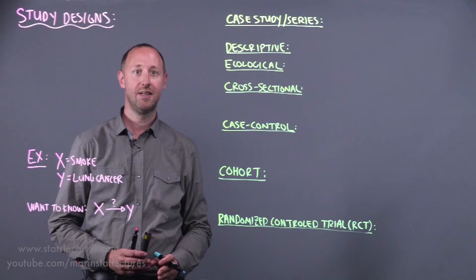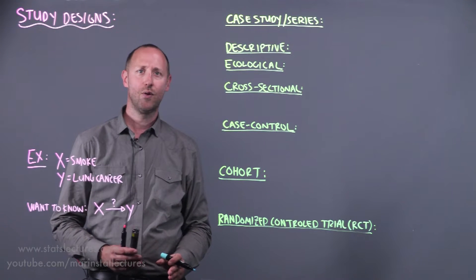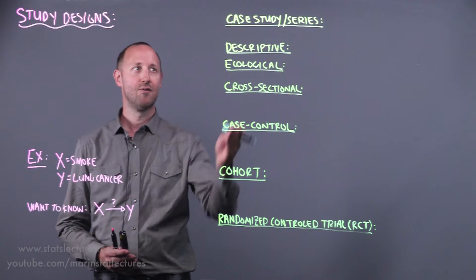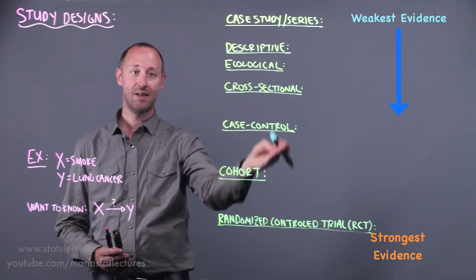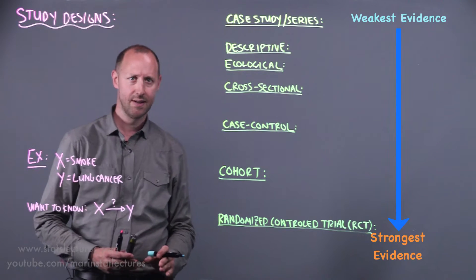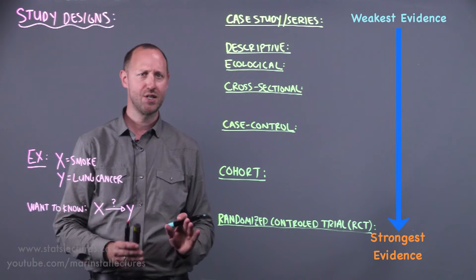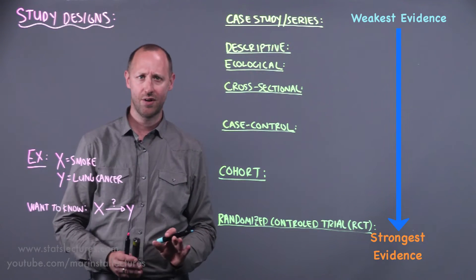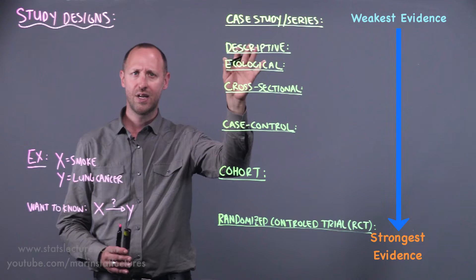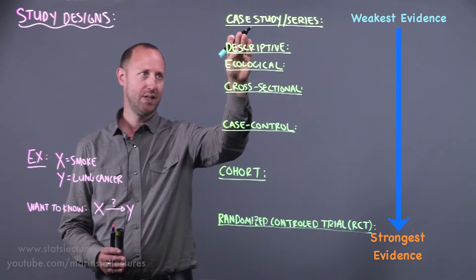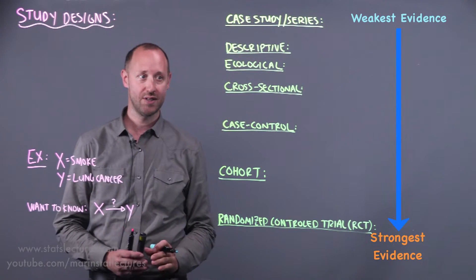Here I've presented the different study designs in order of generally speaking from what provides the weakest evidence down to what provides the strongest evidence. This ordering is not absolute and in some cases might change depending on the question or the context, but in general this is an order that usually provides the weakest up to the strongest evidence.